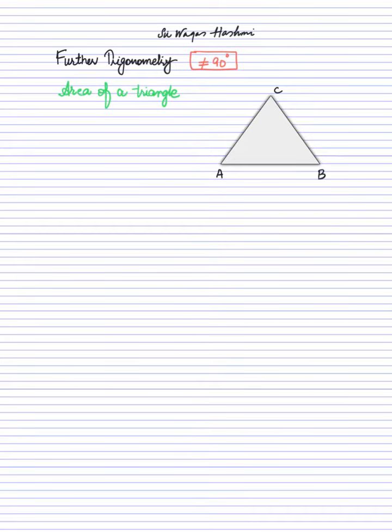How are you going to find out the area of a triangle? The working formula to find the area of a triangle in further trigonometry is A = 1/2 ab sin C. Let's suppose you have a triangle ABC. Capital A represents the angle, and the side opposite to angle A is small a. Similarly, the side opposite to B is small b, and the side opposite to C is small c.